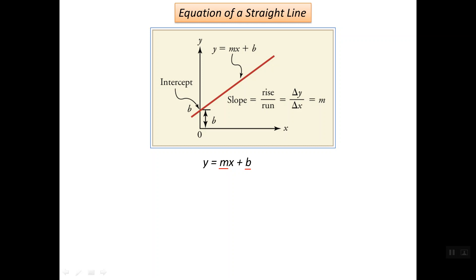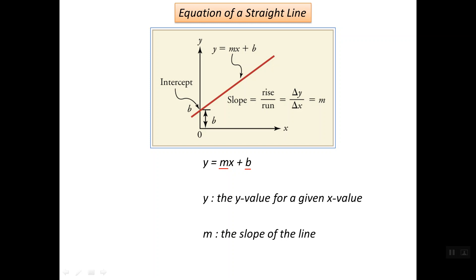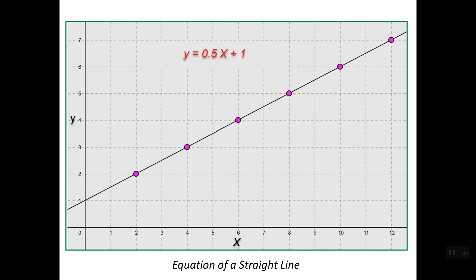In order to determine the formula for any straight line, we need to determine two constants: m and b. The value y is the y-value for any given x-value. Small m is simply the slope or gradient of the line, and the other constant b is simply the y-intercept.